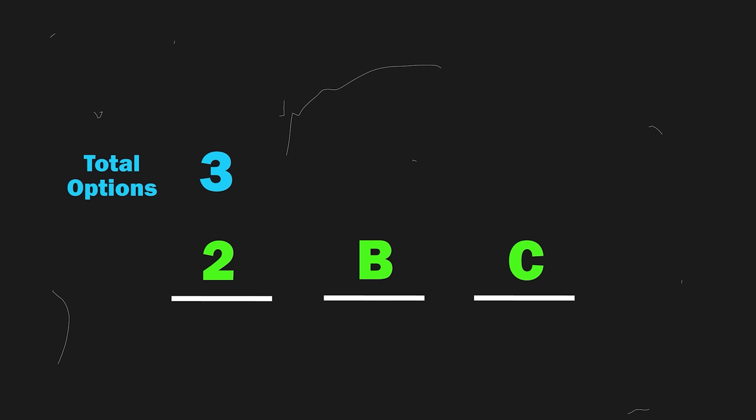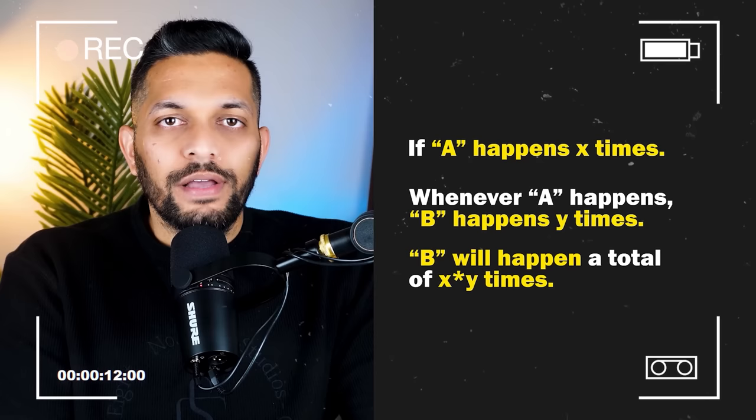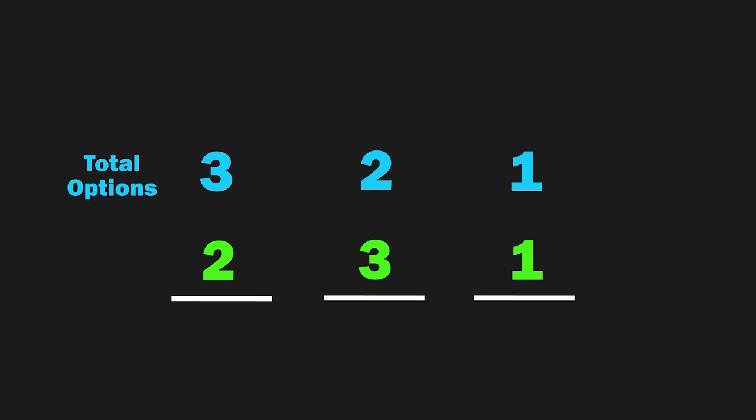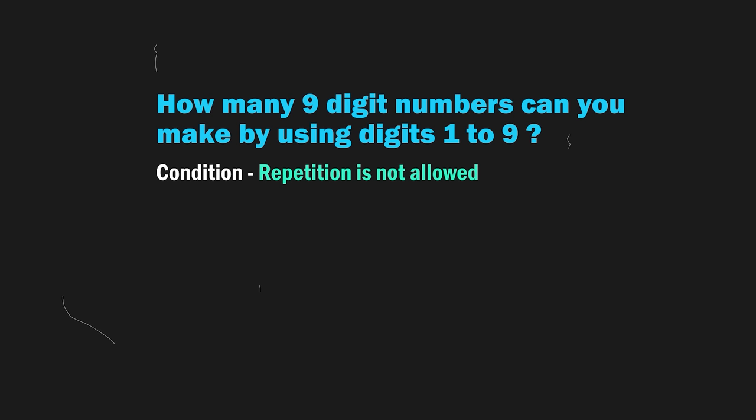We can call the first digit A, second one B, and the third one C. Let's pick the first digit of this number. For that, we can use any digit from 1, 2, and 3. So we have 3 options here. Let's say we pick 2 for the first digit. For the second digit, we only have 2 options left because we can use 1 digit only once. Let's say we pick 3 for the second digit. Now for the last digit, we only have 1 option which is 1. So A can have 3 values. And for each A, B can have 2 values. And for each B, C can have 1 value. Can you see that we can use the first concept we learned today here? So the total 3-digit numbers would be a multiplication of 3, 2, and 1, which is 6.